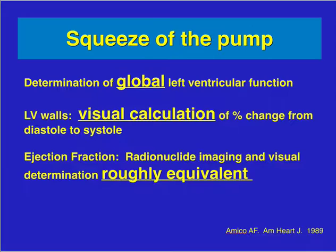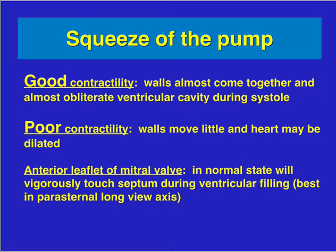Here is a picture showing right ventricular collapse in a patient with tamponade. The next thing to look for is squeeze of the pump. Refer back to the left ventricle lecture to see all the images to calculate poor, normal, or hyperdynamic function. You're not quantifying anything — this is a qualitative measure. Previous studies showed that radionuclide imaging and visual determination of ejection fraction are roughly equivalent.